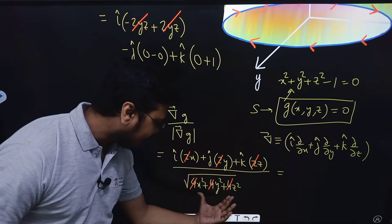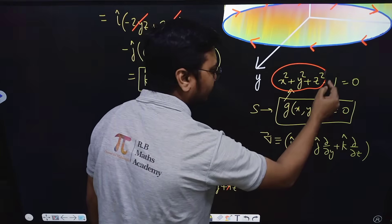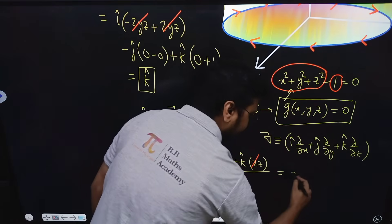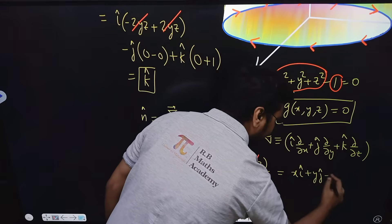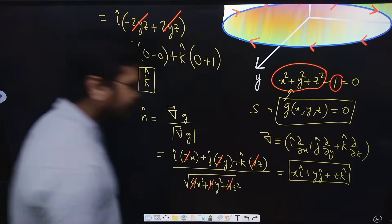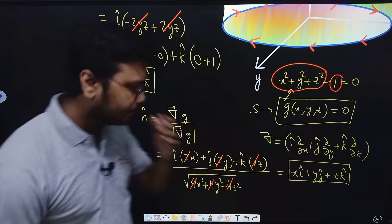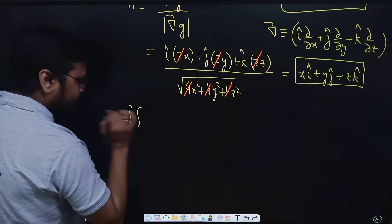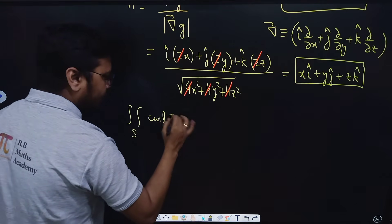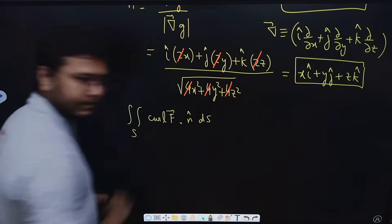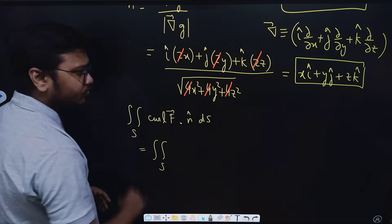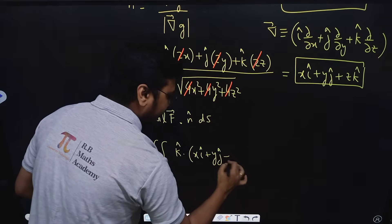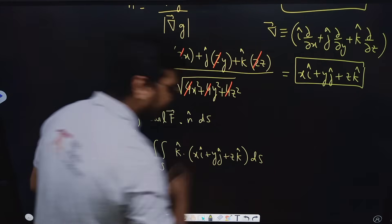Using Stokes theorem we need to evaluate the double integral of curl F dot n̂ dS. We have curl F = k̂ and n̂ = x î + y ĵ + z k̂, so curl F dot n̂ = k̂ dot (x î + y ĵ + z k̂) = z. It is helpful to use the substitution x = r cosθ, y = r sinθ.